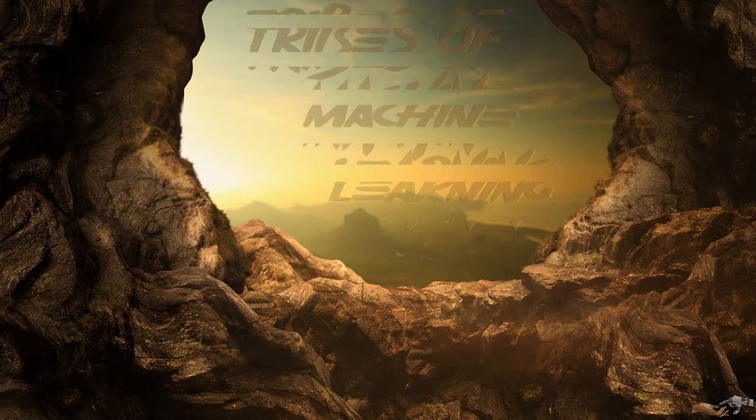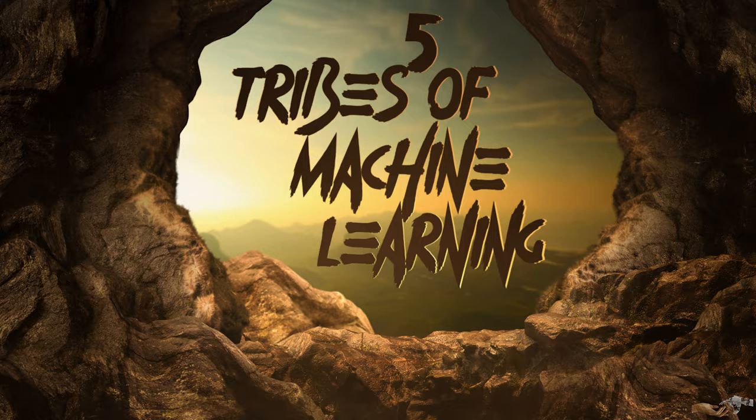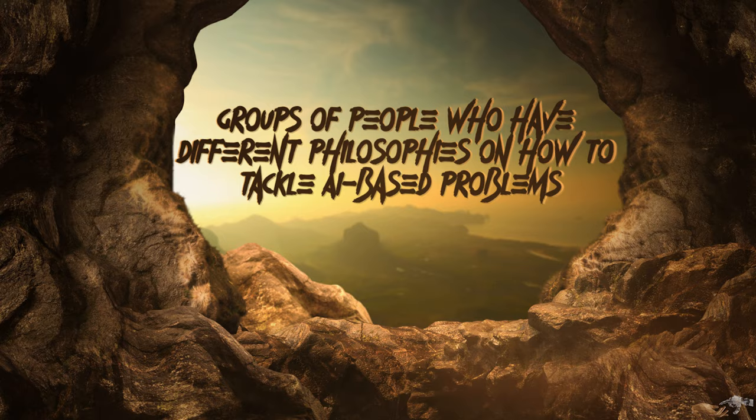There are five primary tribes of machine learning, with tribes referring to groups of people who have different philosophies on how to tackle AI-based problems. We have discussed many of these tribes in past videos, but this list below should make them more concrete.